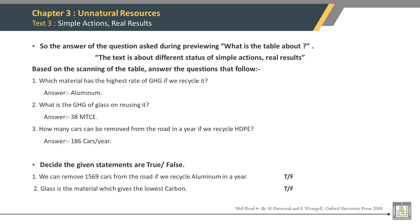Which material has the highest rate of GHG if we recycle it? The answer is aluminum. What is the GHG of glass if we reuse it? The answer is 38 MTCE. How many cars can be removed from the road in a year if we recycle HDPE? The answer is 186 cars per year.